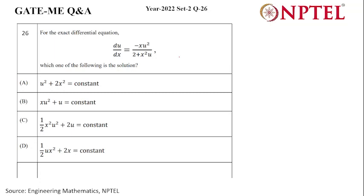Hello all, we are going to solve this question from year 2022 set 2 question 26 of GATE Mechanical Engineering paper. The question is as follows: for the exact differential equation du/dx equals minus xu² divided by 2 plus x²u, which one of the following is the solution?